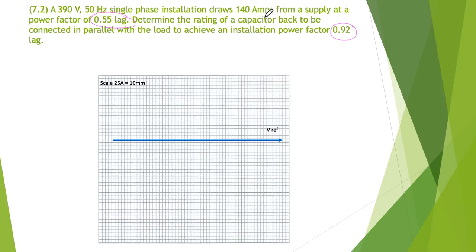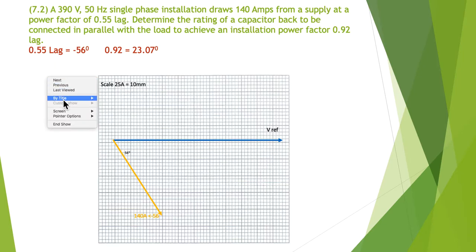We have our 140 amp supply at 56 degrees. I've worked out what the cosine of the angles are. Lag is minus 56 degrees and 0.92 is minus 23 degrees. I've left the minus sign out of there. We've simply scaled in our first angle.